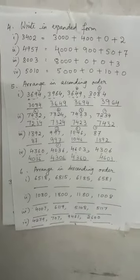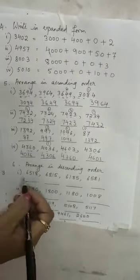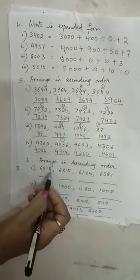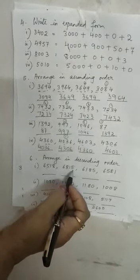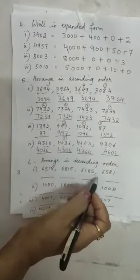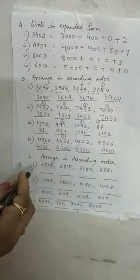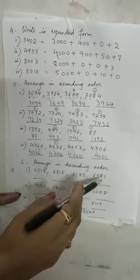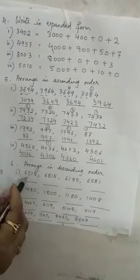So let us find out which is the biggest among the 4 numbers. Let us first read the numbers: 6518, 6815, 6185, 6581. We find that all 4 are 4-digit numbers, each starting with 6000.